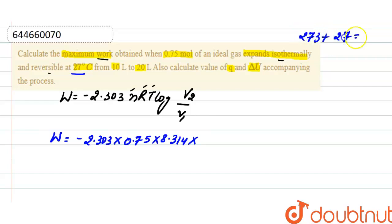So it will be 300 Kelvin, into 300, log of final volume is 20 liter and initial volume is 10 liter.